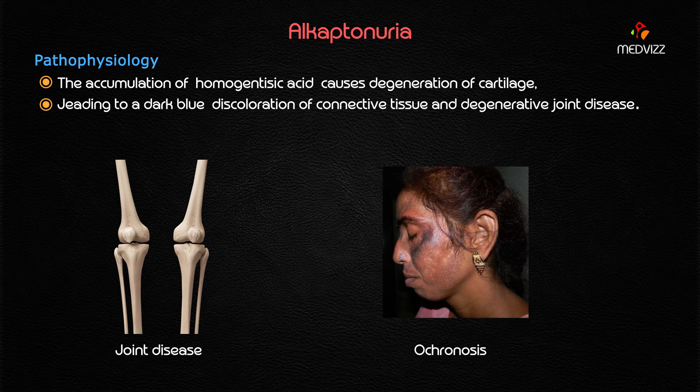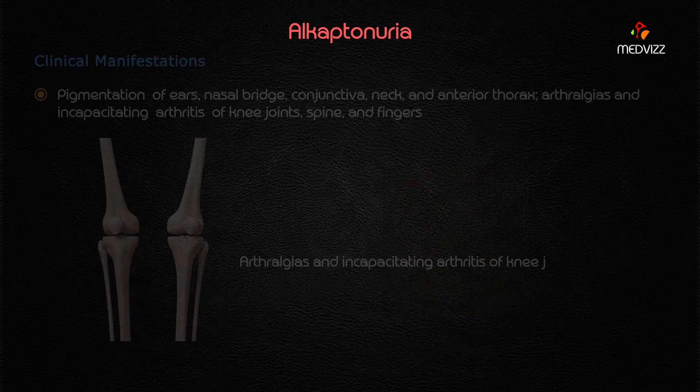The accumulation of homogentisic acid specifically causes degeneration of cartilage, leading to a dark blue discoloration of connective tissue called ochronosis. This results in degenerative joint disease, especially at the knee and spine joints. The clinical manifestations are more severe due to homogentisic acid compared to tyrosine or phenylalanine accumulation.